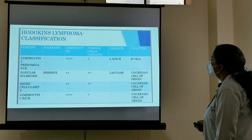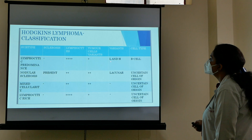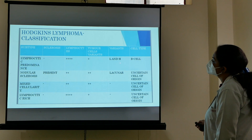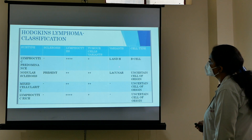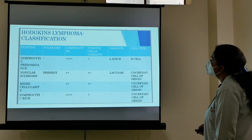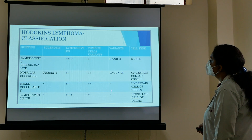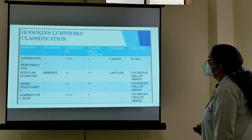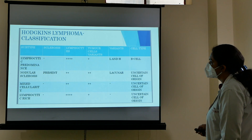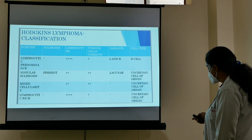The key difference is that in lymphocyte predominance (nodular lymphocyte-predominant), RS cells are not present — instead, LH cells (lymphocytic and histiocytic cells, also called 'popcorn cells') are seen. In nodular sclerosis, mixed cellularity, lymphocyte-rich, and other classical subtypes, Reed-Sternberg cells are present.